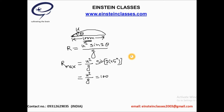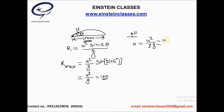Now the problem asks: what is the maximum height above the ground that the cricketer can throw the same ball? He is now throwing the ball vertically upward with speed u — the same maximum speed with which the cricketer can throw the ball. In this situation, the height h will be equal to u squared divided by 2g. From u squared by g equals 100, we get u squared by 2g equals 100 divided by 2, which equals 50 meters.